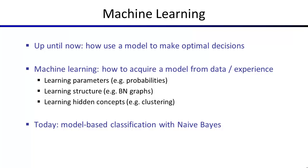Looking back on the course, we've really done two big units. The first part was about making decisions — predicting long-term consequences, dealing with adversaries, sequences of actions in search. The middle part was about how to deal with the fact that not everything about the world is observed to you, reasoning about variables using other variables. So it was really all about reasoning with uncertainty.